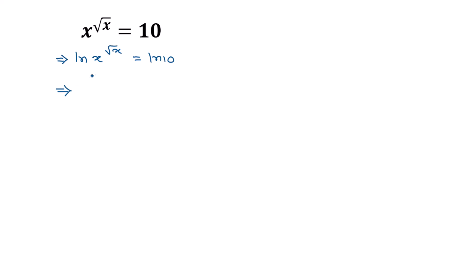Applying the logarithm formula — ln of a to the power b is equal to b times ln of a — and applying this formula to the left side, treating ln of x as 'a' and square root of x as 'b'.